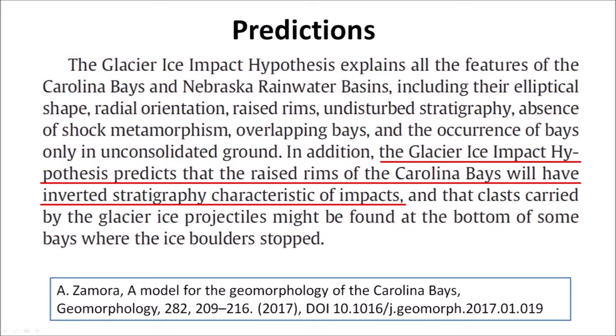These features include their elliptical shape, radial orientation, raised rims, undisturbed stratigraphy, absence of shock metamorphism, overlapping bays, and the occurrence of bays only in unconsolidated ground. In addition, the Glacier Ice Impact Hypothesis predicts that the raised rims of the Carolina Bays will have inverted stratigraphy characteristic of impacts, and that glass carried by the glacier ice projectiles might be found at the bottom of some bays where the ice boulders stopped.